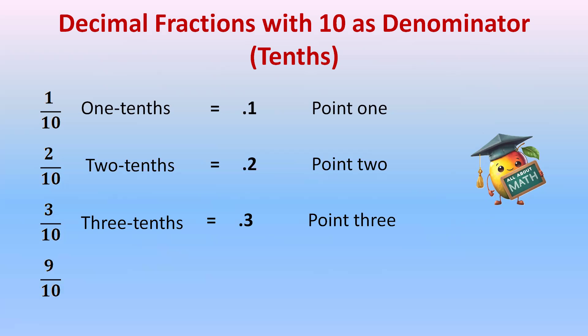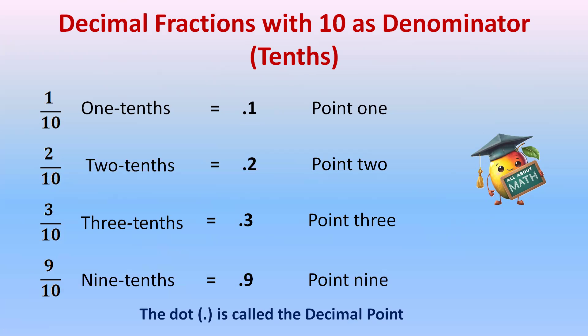9 by 10 — again 9 tenths, and we can call it in decimal form as 0.9. So it's very easy when we have denominators as 10. When we have denominators as 10, we call them tenths, and in decimal we just write a dot — called the decimal point — and after the decimal point we write the number which is in the numerator: 0.1, 0.2, 0.3 and 0.9. This is the word form of decimal form.